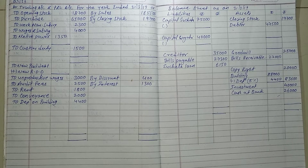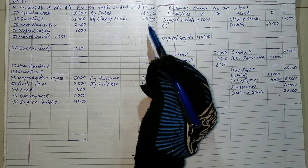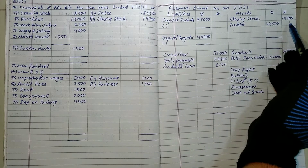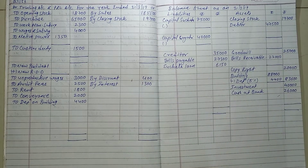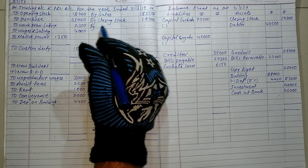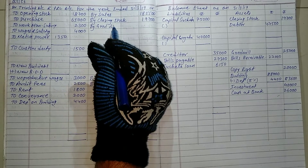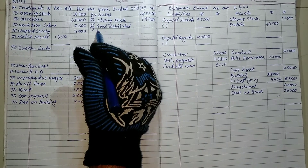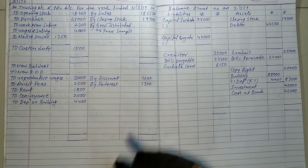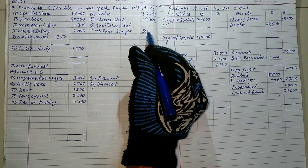Let's start solving the sum. You can see the trial balance has been posted. There are some common adjustments. Adjustment number one: closing stock — already entered on the trading account credit side and balance sheet asset side. Adjustment two: goods distributed as free sample. Goods going outside the company — trading account credit side, goods distributed as free sample.